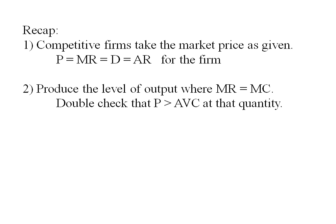The firm's going to produce the level of output where marginal revenue and marginal cost are equal. And then double check when you find that quantity, that at that quantity, price exceeds AVC.